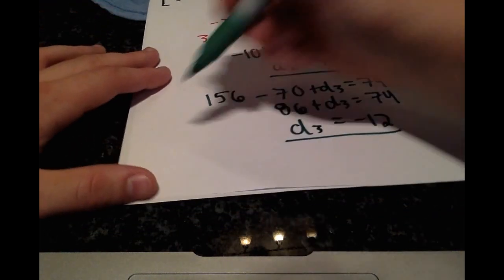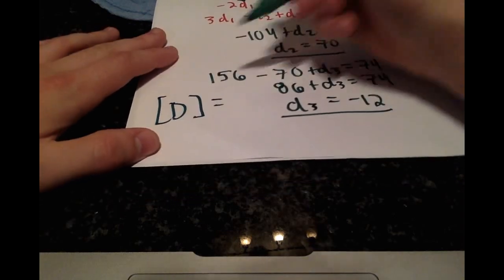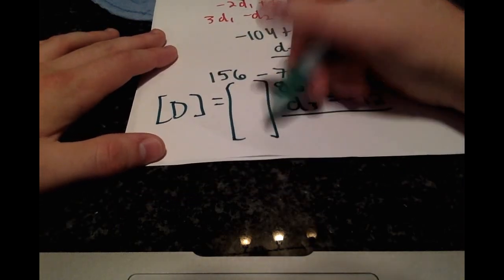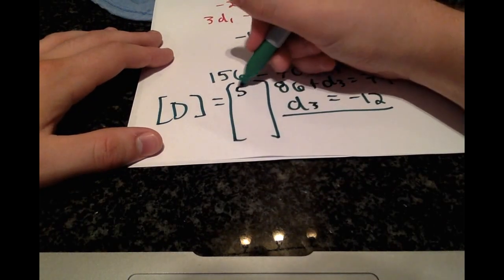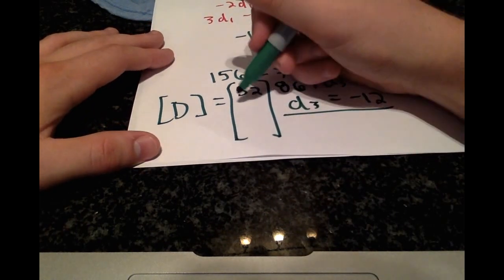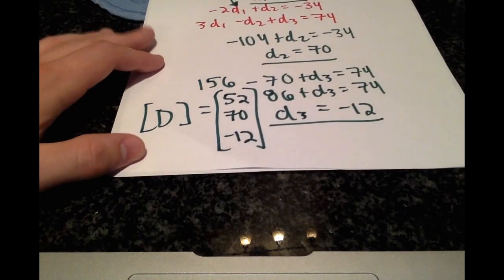So writing the whole d vector with d1, d2, d3, we have 52, 70, and negative 12.